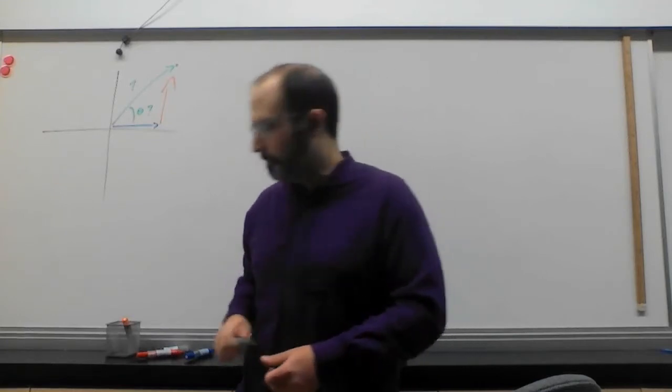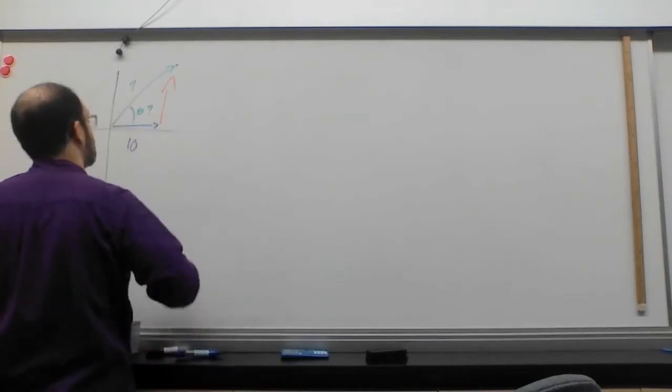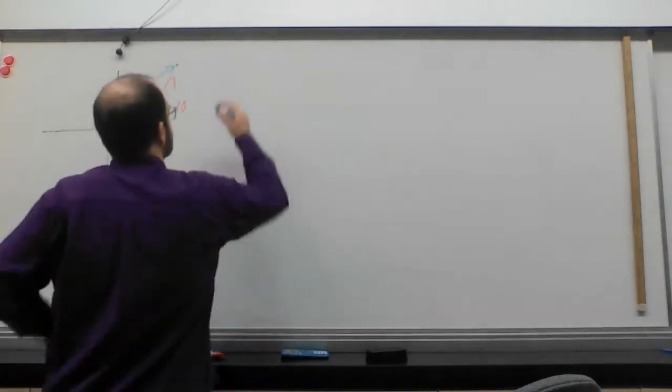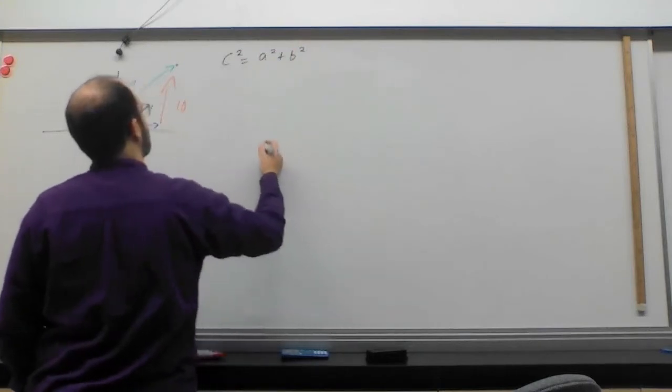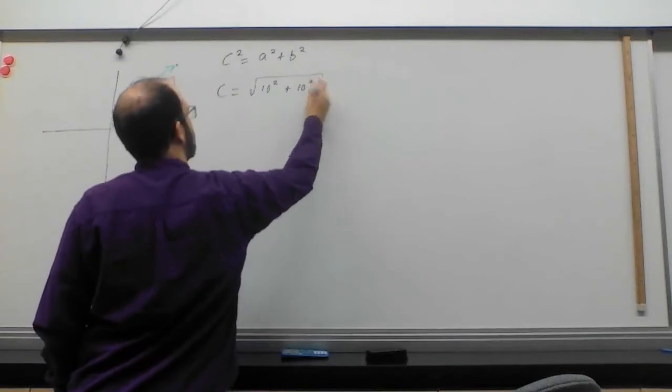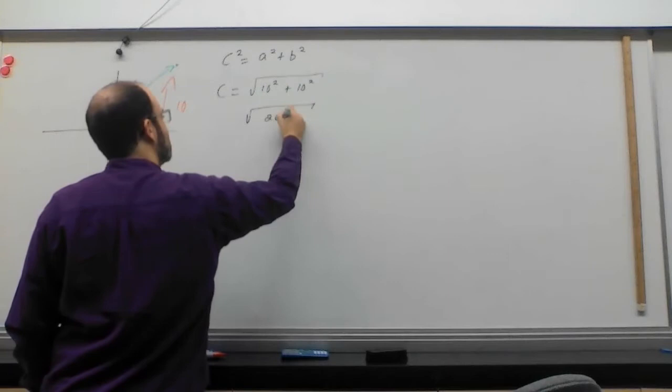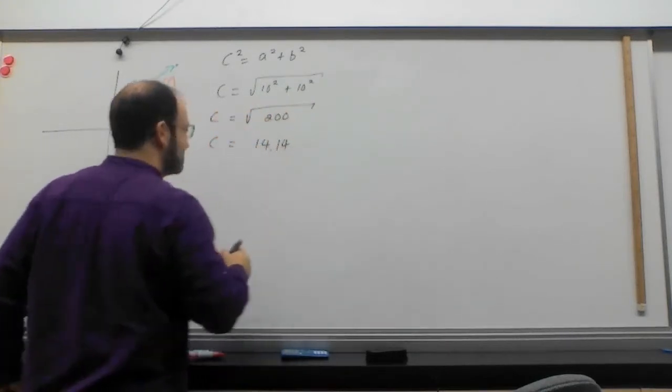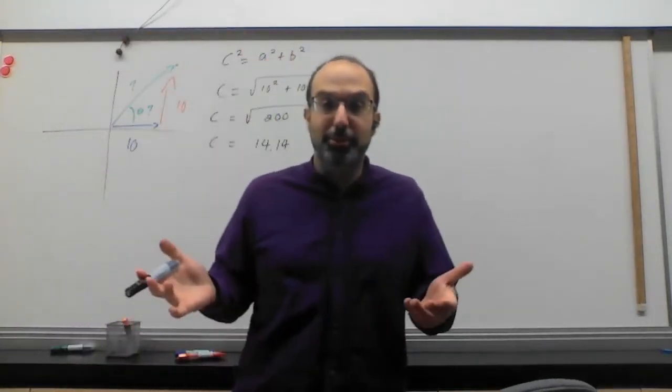How do we do that? Pythagoras. The Pythagoras equation. So if I make up some numbers here, let's do 10, and let's just do 10 for both. Then my equation is going to be c squared equals a squared plus b squared. So c is going to equal square root of 10 squared plus 10 squared. 10 squared is 100, so this is 200. So the root of 200 is going to be 14.14.